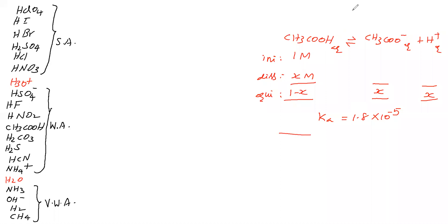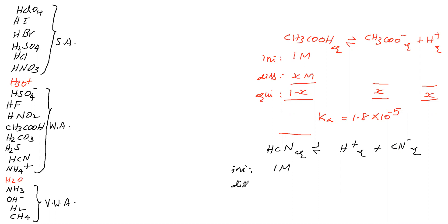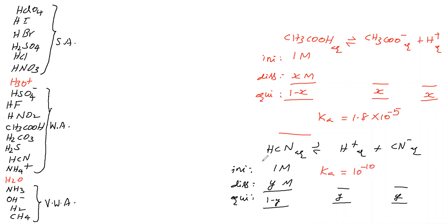Now we take another weak acid HCN. HCN dissociates to give H⁺(aq) and CN⁻(aq). Taking 1 molar HCN, it dissociates Y molar; at equilibrium: 1−Y molar HCN, Y molar H⁺, Y molar CN⁻. The equilibrium constant for HCN is 10⁻¹⁰. This equilibrium constant for acetic acid is roughly 10⁵ times greater than that for HCN.